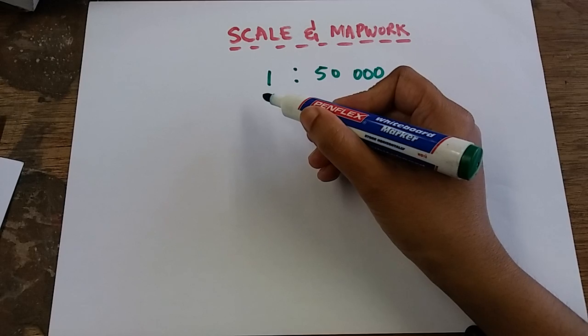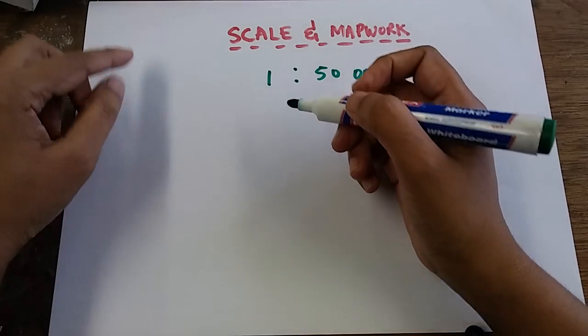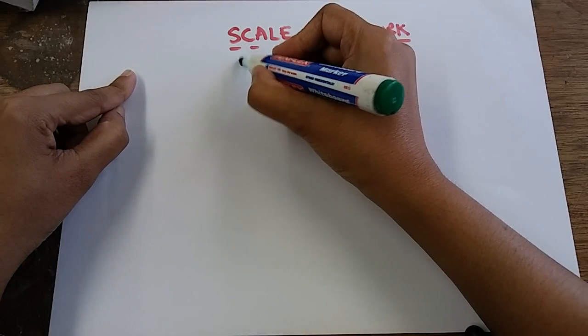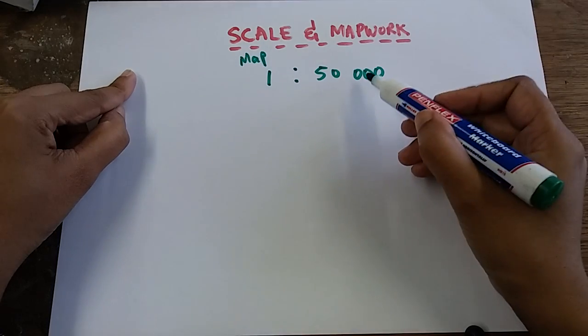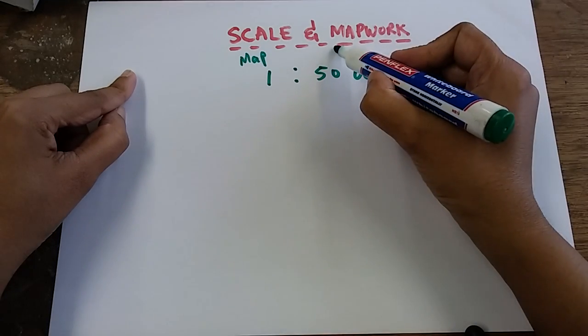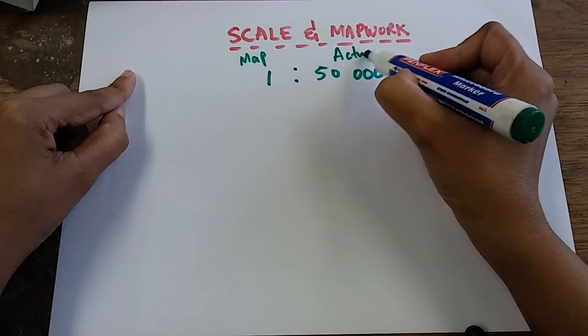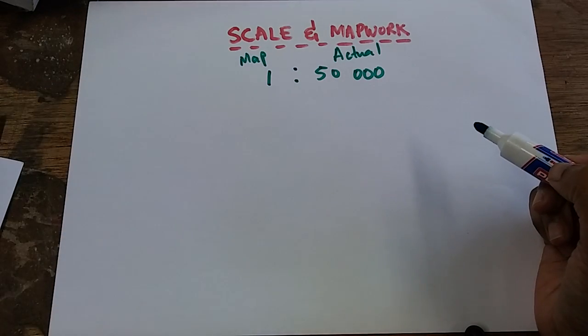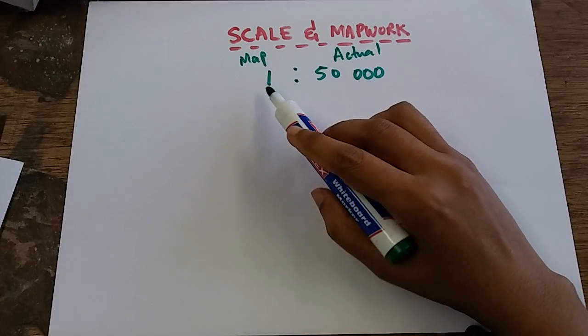So I know that my 1 is going to represent my distance on map or my distance on plan. My 50,000 is going to represent my actual distance or my ground distance.